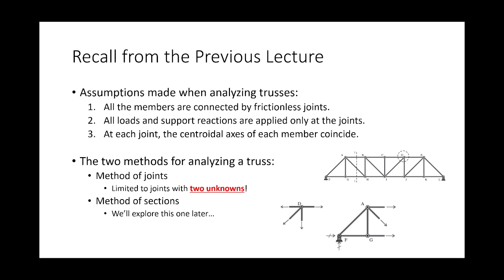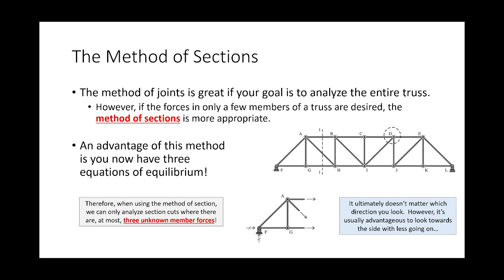Why is the method of joints limited to two unknowns? Because you only have two equations. When you're looking at a joint, all forces go through a common point — it's a particle statics problem, a concurrent force system. With the method of sections, that's not the case. We break out the old secret weapon of structural engineering — a samurai sword or lightsaber — and cut a section through the truss, then investigate the equilibrium of the free body diagram on one side.